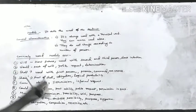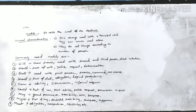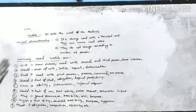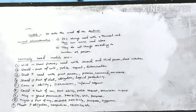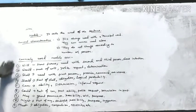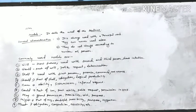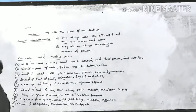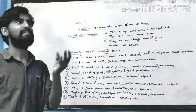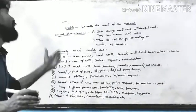Second, modals do not change according to number or person — they have a fixed form and do not change their form. Commonly used modals: there are nine most commonly used modals in our grammar book, and three semi-modals: need, dare, and used to. These are termed semi-modals because they can be used as modals and also as main verbs.